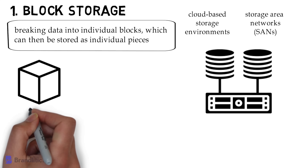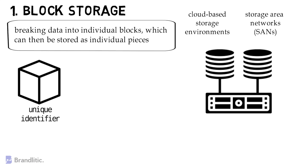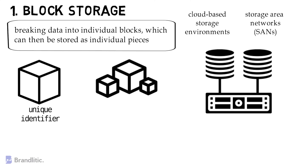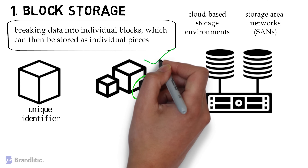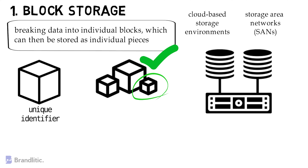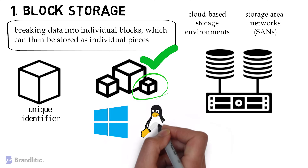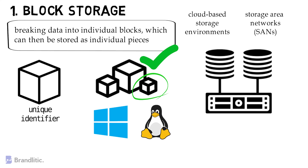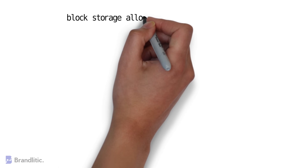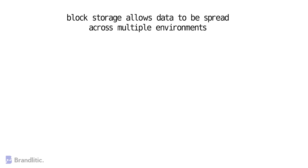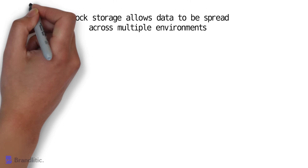Each data block is given a unique identifier which further allows the storage system to place the smaller pieces of data in the most efficient location. The approach involves storing blocks across different systems, with each block configured or partitioned to work with a different operating system. This means that blocks of the same original data can be stored in both a Linux environment and a Windows unit as well. By decoupling data from your user environment, block storage allows the data to be spread across multiple environments, and in creating such multiple paths to the data, the process of retrieving data is accelerated.